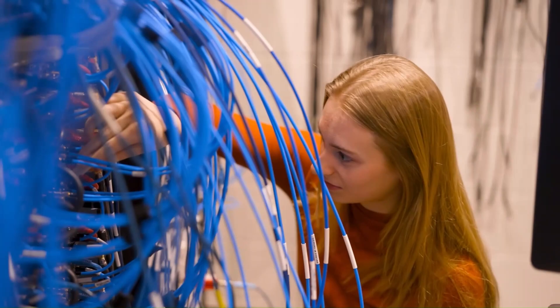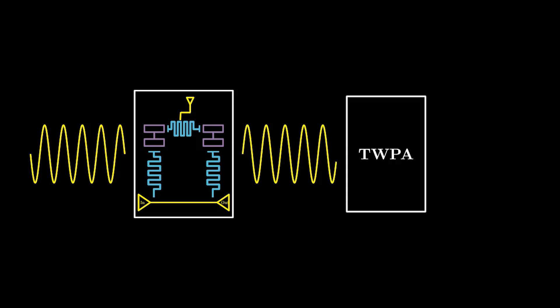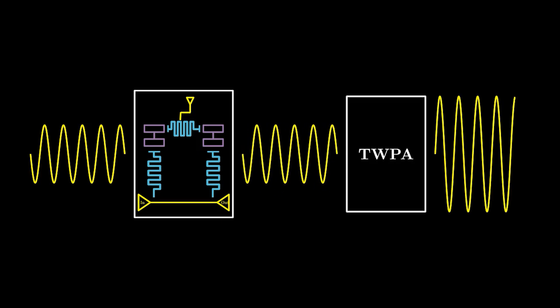Most quantum computers, therefore, have several stages of amplification. For example, towards the bottom of the fridge, where it's coldest, output lines may have a traveling wave parametric amplifier, or TWPA. A TWPA is one type of quantum limited amplifier, meaning that it is literally as good as physically possible given the laws of quantum mechanics.